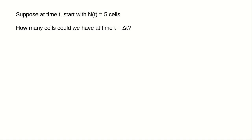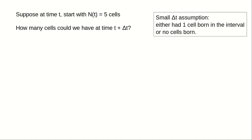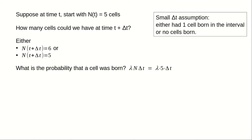To derive the stochastic model, let's be concrete and suppose that at time t, we have N of t equals five cells. How many cells could we have after a time interval delta t? Remember that delta t is assumed to be small. In this case, we have only two options: either one cell was born, so that we now have six cells, or no cells were born, so that we still have five cells. The probability that a cell was born, according to our model, will be lambda times n times delta t. Since we are assuming we have five cells, the probability will be lambda times five times delta t. If delta t is small enough, this number will be less than one, so it can be a probability.